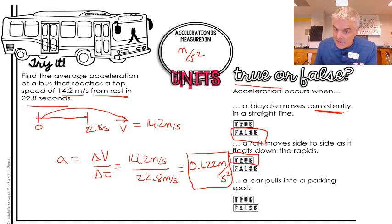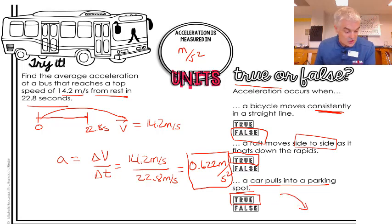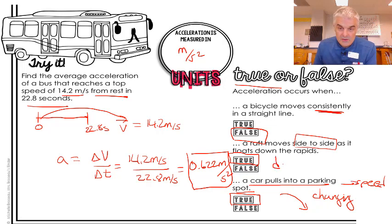Because it is moving side to side. So it's a directional change. A car pulls into a parking spot. Again, ding, ding, ding. True. Because when you pull in the parking spot, you're going to have to decelerate, slow down to stop. So it is changing its speed, right? Changing the speed. That's why this one's true. This was here. This is changing direction, right? You see the idea.